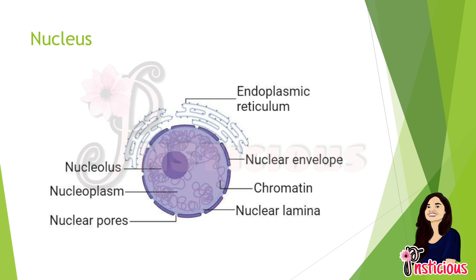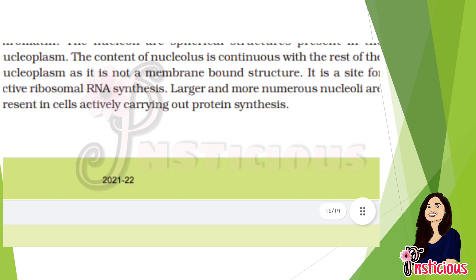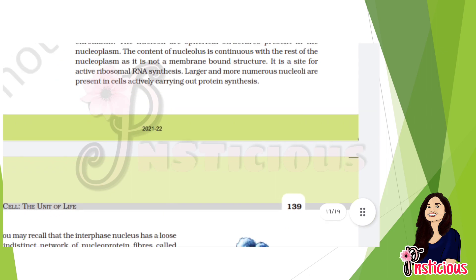The nucleolus is a spherical structure continuous with the nucleoplasm and is not a membrane-bound structure. At interphase, the nucleus has a loose and indistinct network of nucleoprotein fibers called chromatin. During cell division, these form distinct structures called chromosomes in place of the nuclear material.